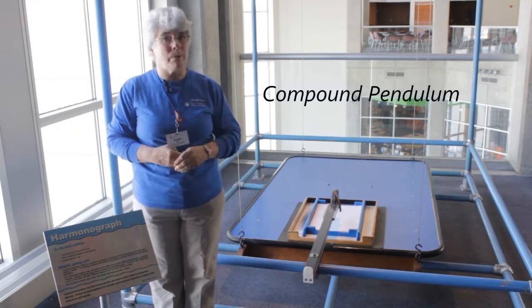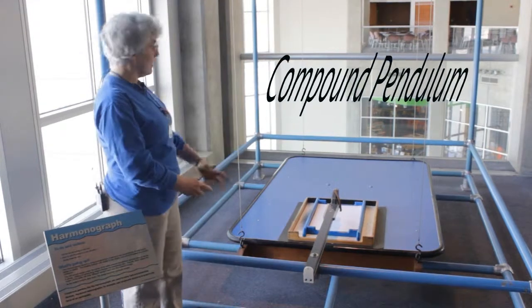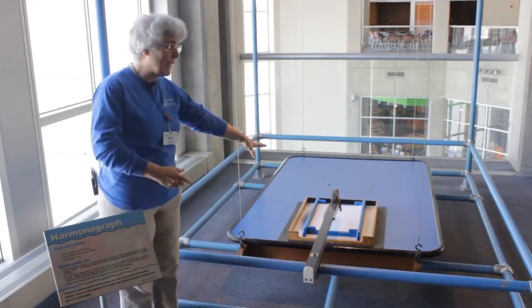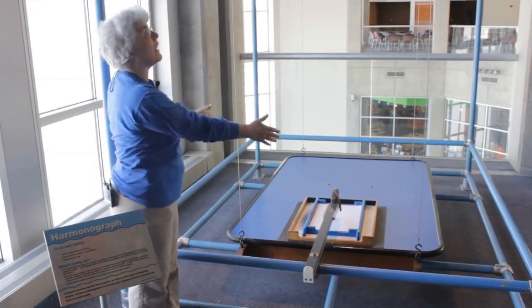This is an example of a compound pendulum. It consists of a table with a pad of paper on it that's suspended with cables on a frame.